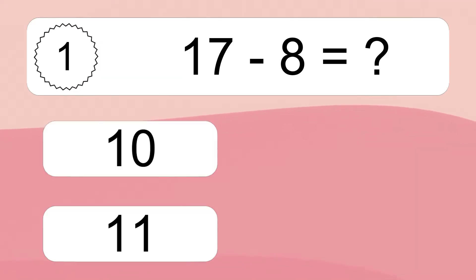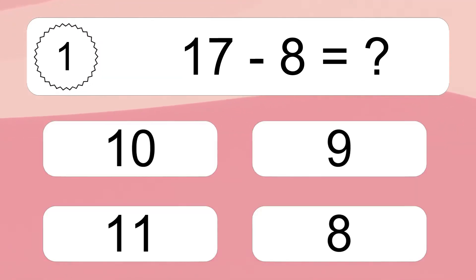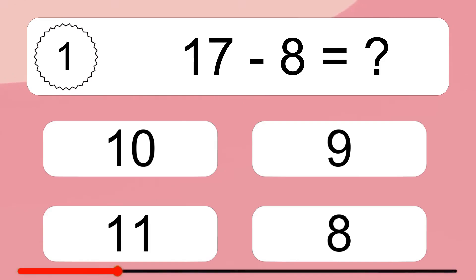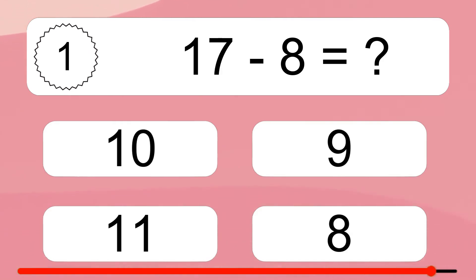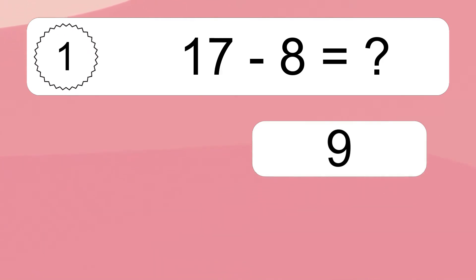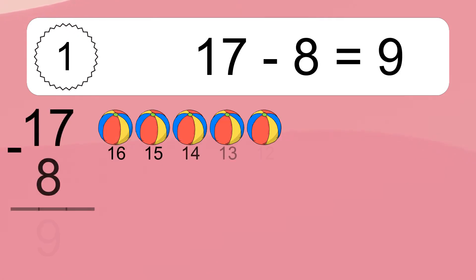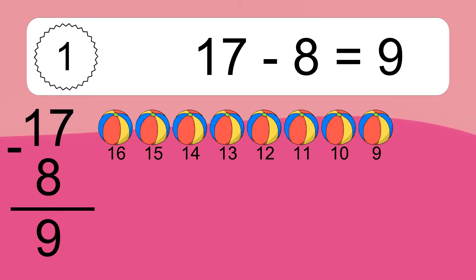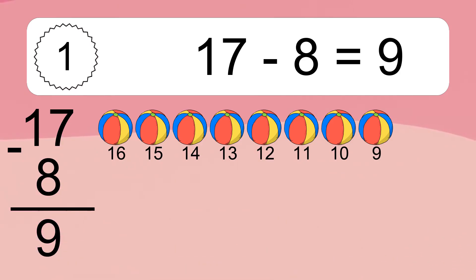17 minus 8 equals what? 17 minus 8 equals 9. Let's count it: 16, 15, 14, 13, 12, 11, 10, 9.